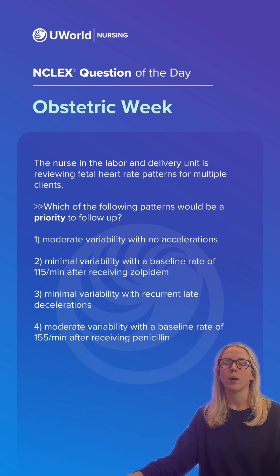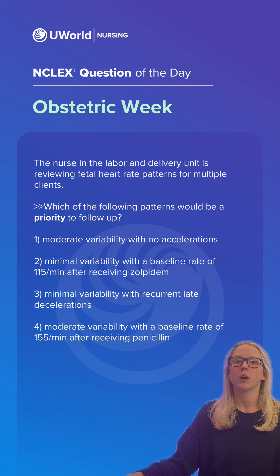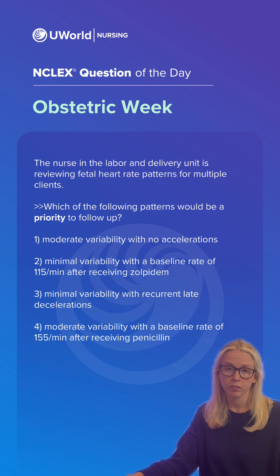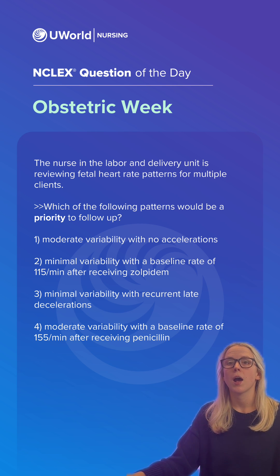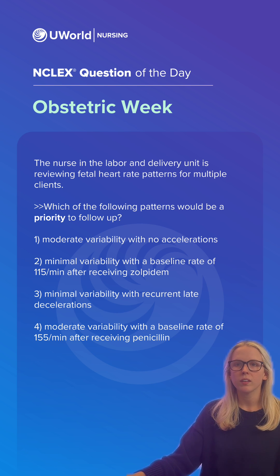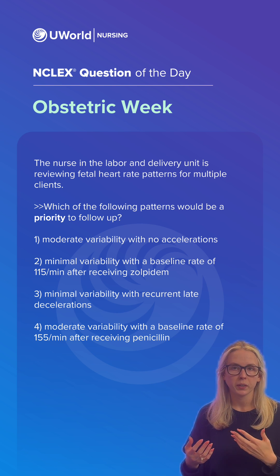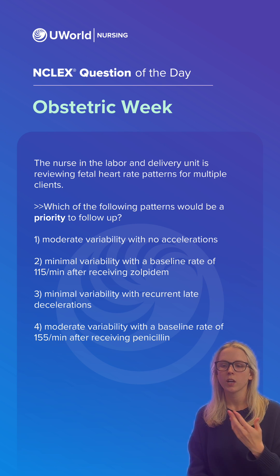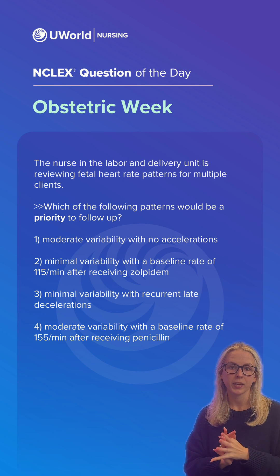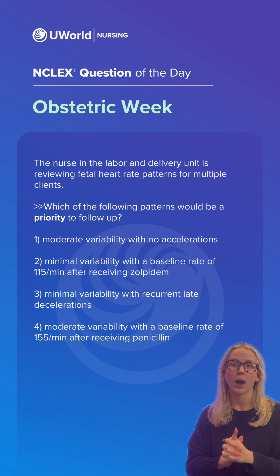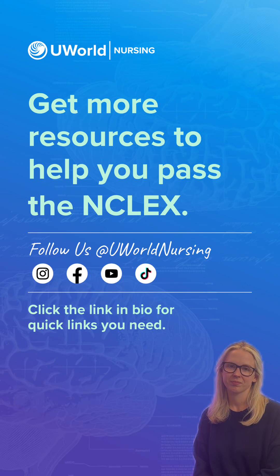Option 4 shows moderate variability — which we want to see — with a baseline rate of 155 beats per minute, within the 110 to 160 range, after receiving penicillin. We're not concerned about this baby; it's a Category 1 strip. We commonly give penicillin to mothers who are GBS positive, and it can also be given prophylactically. So again, option 3 was our correct answer because it requires follow-up. Click the link in the bio for more information on UWorld Nursing.